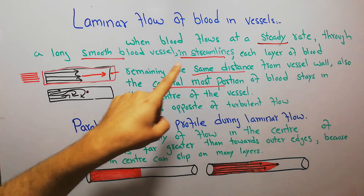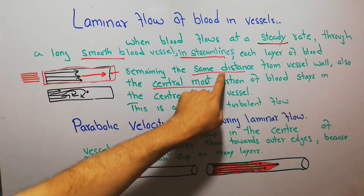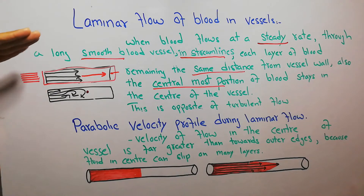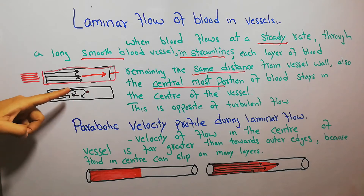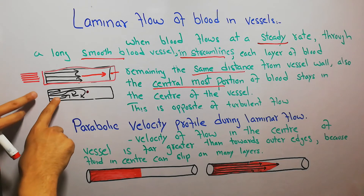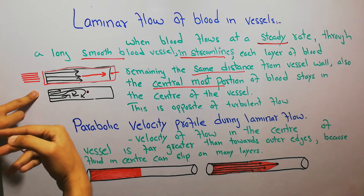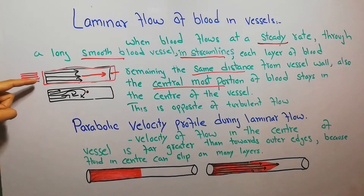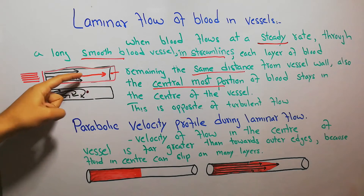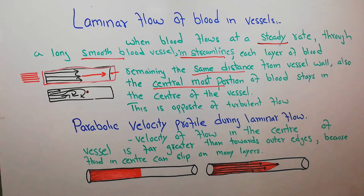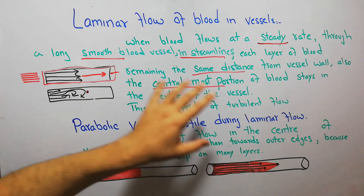In turbulent flow, layers do not maintain the same distance from the vessel wall. In laminar flow, the distance of each layer from the vessel wall is maintained in a specific fashion. In turbulent flow, some layers move toward the vessel wall, some move away, spacing between layers varies, and the central most portion of blood is not in the center of the vessel.